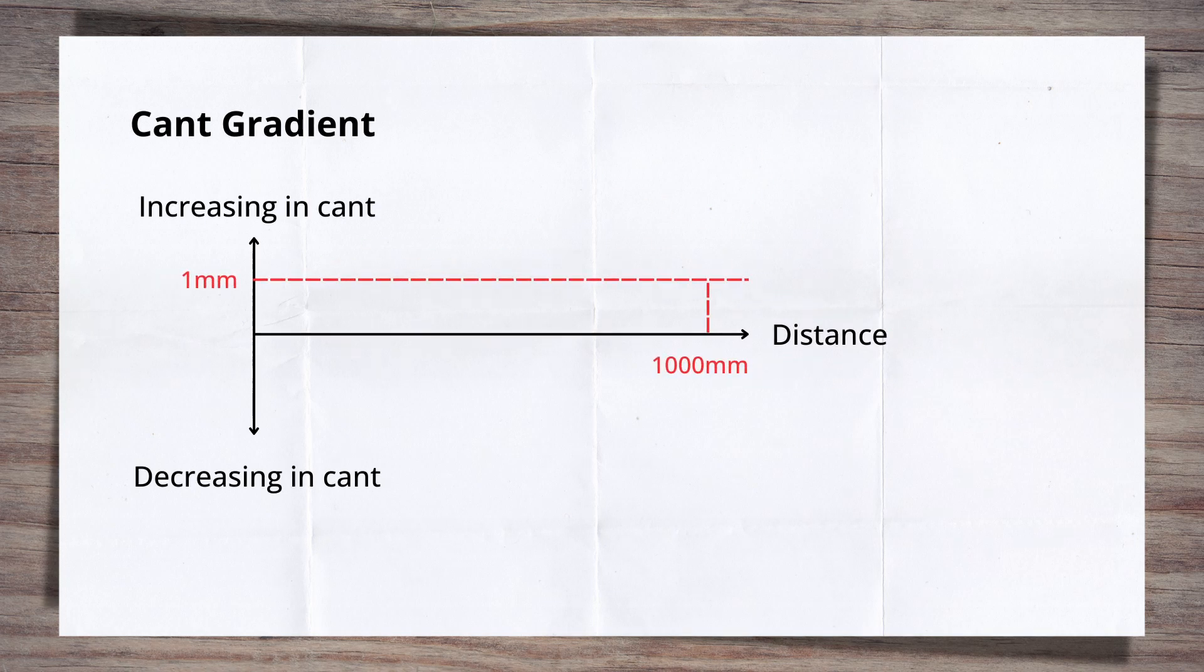So let's say we increase the cant by one millimeter over a thousand millimeters or meter. This would give a cant gradient of one in one thousand.